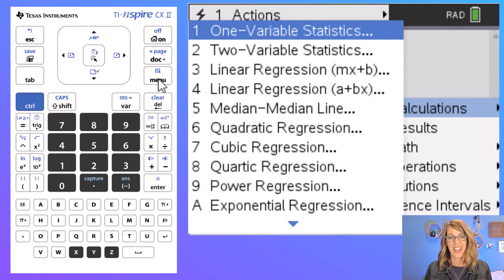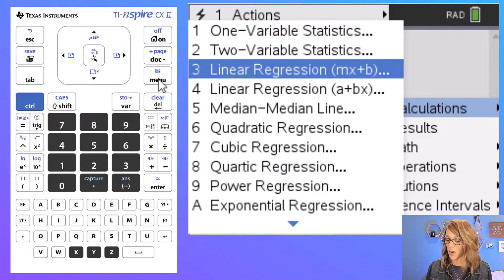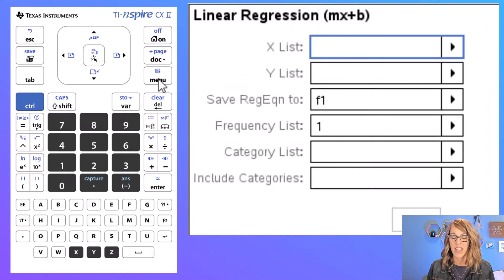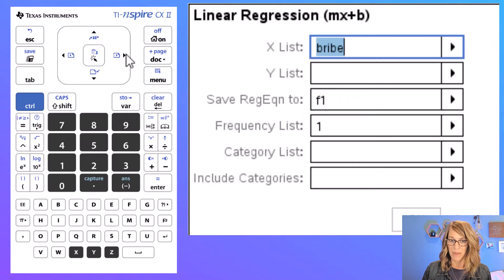And we want stat calculations which is one. It's a little bit buried, and then either number three or four. They are both the linear regressions just in a different order. I'm going to go ahead and choose number three here. It wants my x list. That's my explanatory variable. I'm going to hit the right arrow and there is bribe, that was my explanatory variable, and then enter.